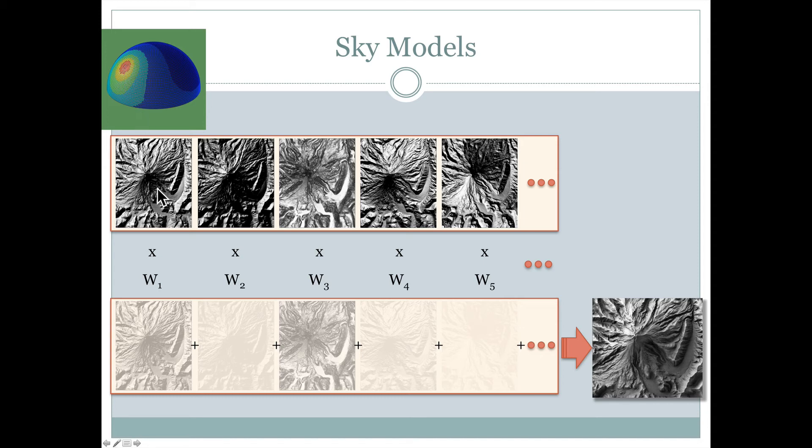So in this example here we're using 250 of these. We take all of those hill shadings. We multiply them by some weight. These W1, W2 based on how bright the sky is that this particular illumination vector represents and then we just add all those together and we get a hill shaded map like we see here.